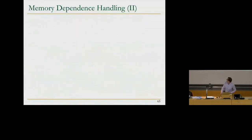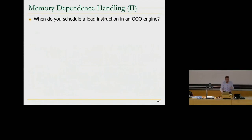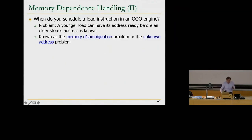We're not going to solve the entire problem — I'll give you the complexity and some approaches to handle it. Believe me, this is the messiest part of an out-of-order execution engine and also the least scalable part. If you thought it was the tag broadcast logic, you're wrong — it's really this logic that limits scalability. The key question is: when do you schedule a load instruction in an out-of-order execution engine? The problem is that a younger load can have its address ready before an older store's address is known. This is known as the memory disambiguation problem, or the unknown address problem.